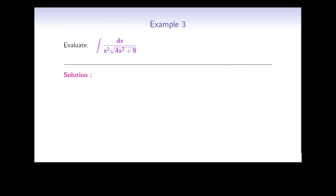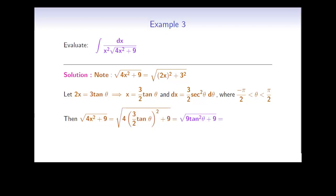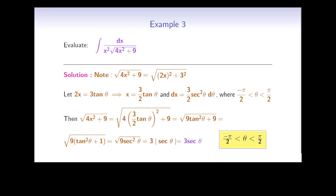Let's do one more example with the square root of 4x² plus 9. We can think of this as (2x)² plus 3², so 2x should be replaced by 3 tan theta — we use tan theta because we have something involving x² plus a number. This means x equals (3/2) tan theta, so dx equals (3/2) secant² theta dθ, on the interval −π/2 to π/2. Replacing x with (3/2) tan theta, the square root simplifies to the square root of 9 tan² theta plus 9, which factors as 3 secant theta (since secant theta is positive on this interval).